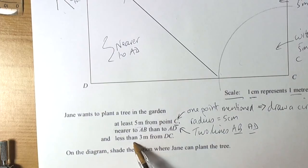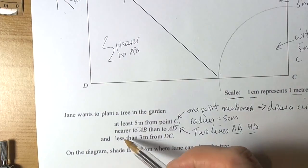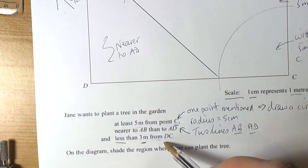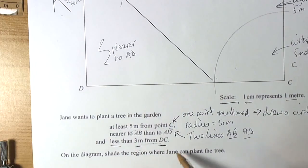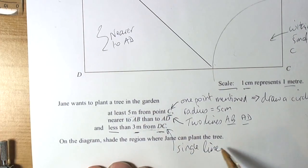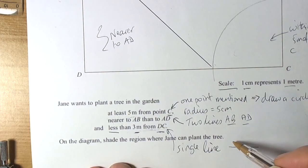In this question they gave a third condition. It has to be less than three metres from DC. Now, DC is a single line. When you're asked to work with a single line and the position of things in a loci question, they're asking you to draw a parallel line.